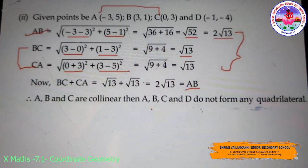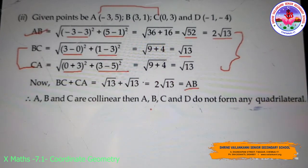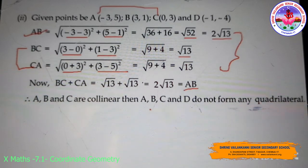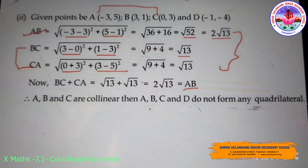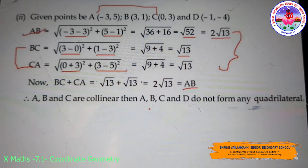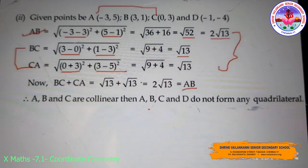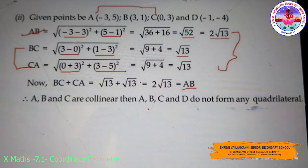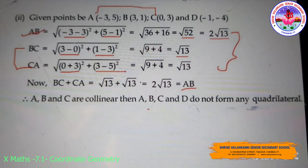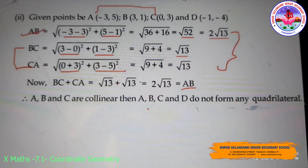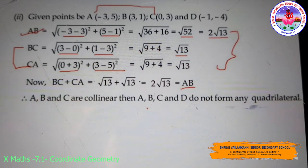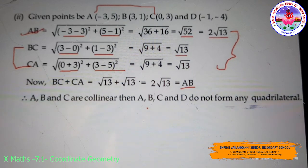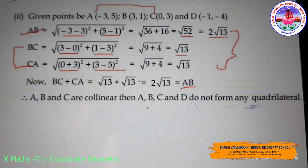For the second subdivision, we take A(-3, 5), B(3, 1), C(0, 3), and D(-1, -4). As usual we find distances AB, BC, CD, and DA. For AB with A(-3, 5) as (x1, y1) and B(3, 1) as (x2, y2): AB = √[(3 - (-3))² + (1 - 5)²] = √[36 + 16] = √52 = 2√13.